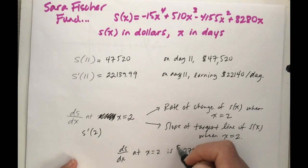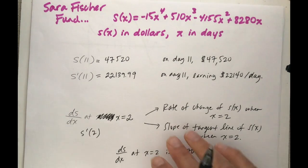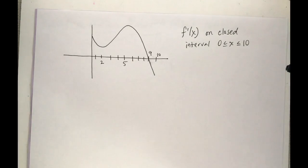So when I go to my calculator, ds/dx at x equals 2 is some bad news. It's about negative $2,700 per day. So luckily day 11 looks better, but right now if I'm living in day 2, Sarah Fisher fund is not doing well. I am losing $27,000 a day approximately.